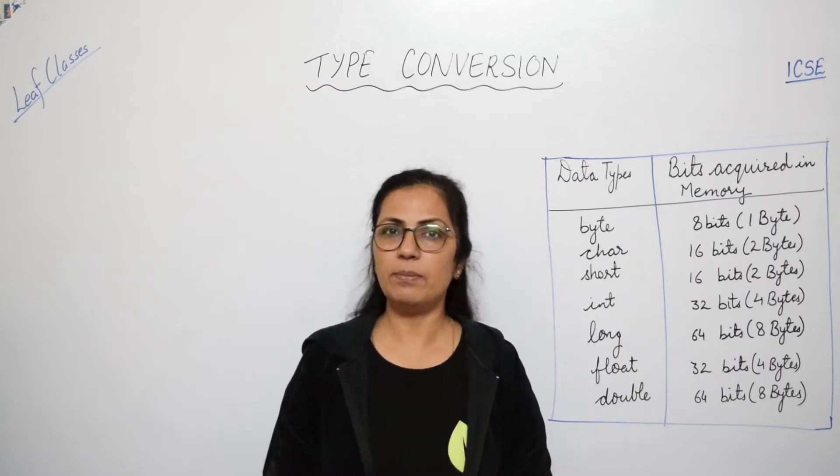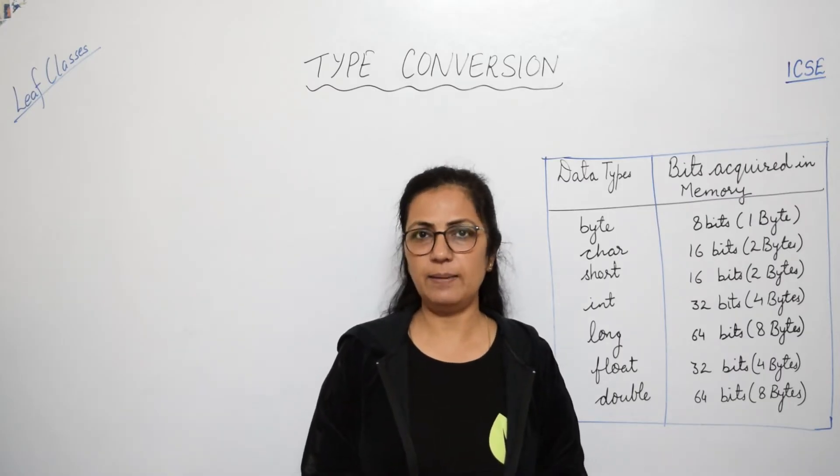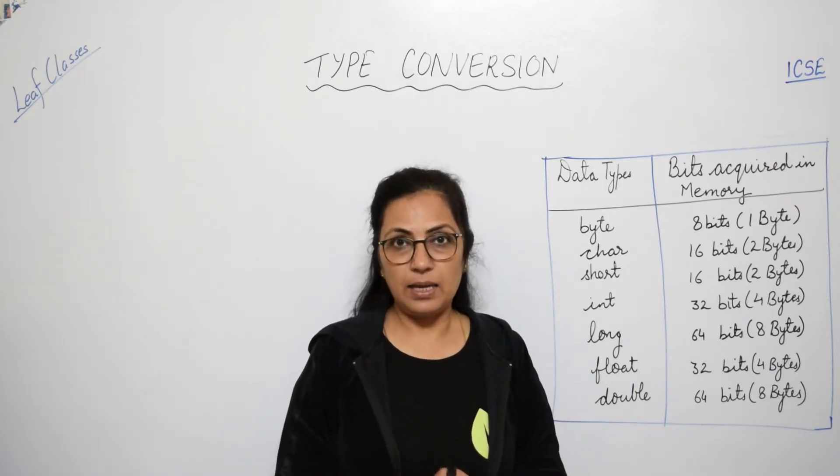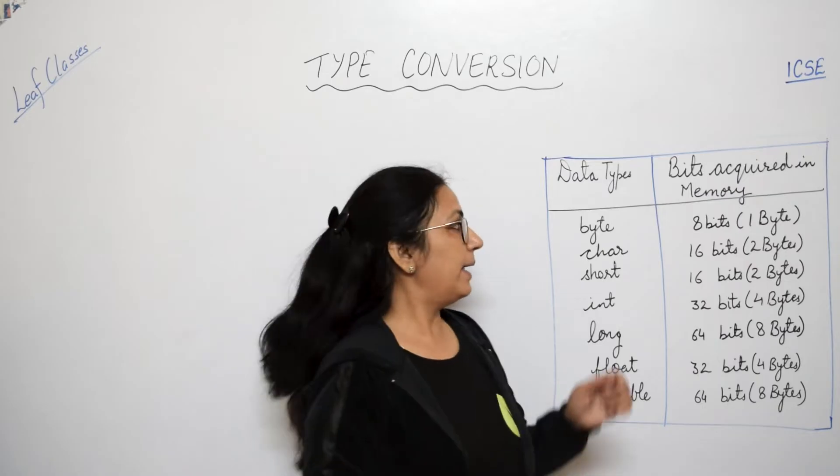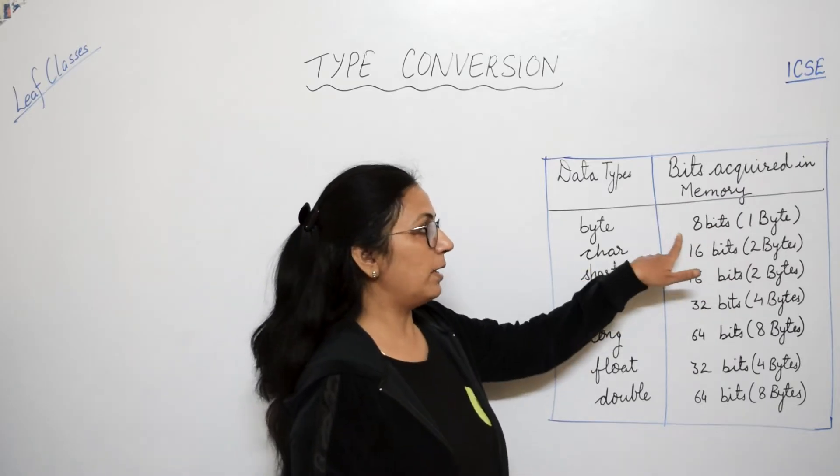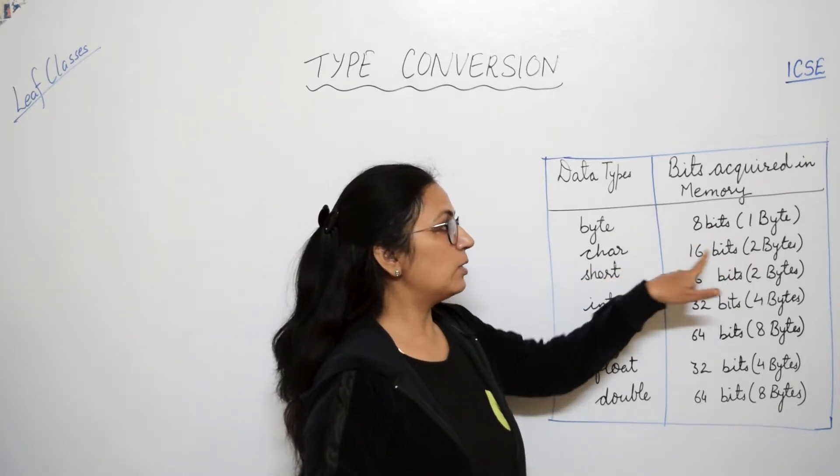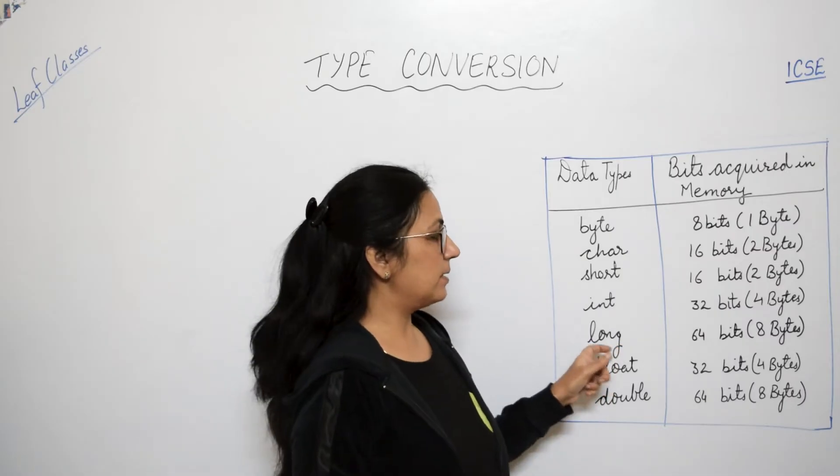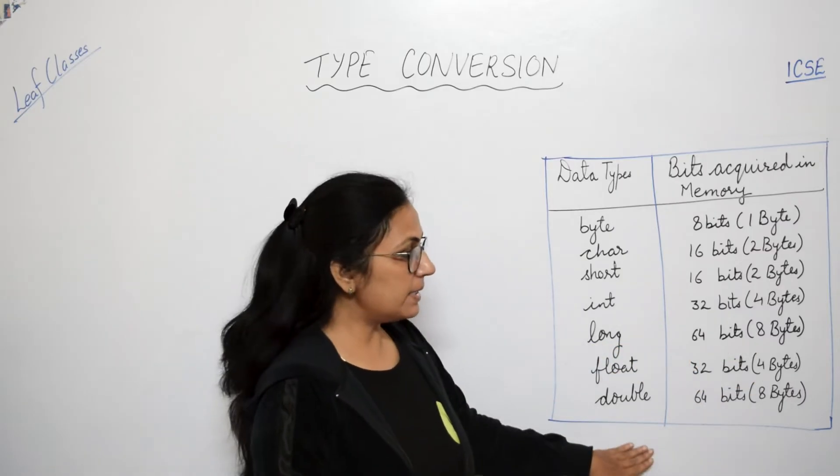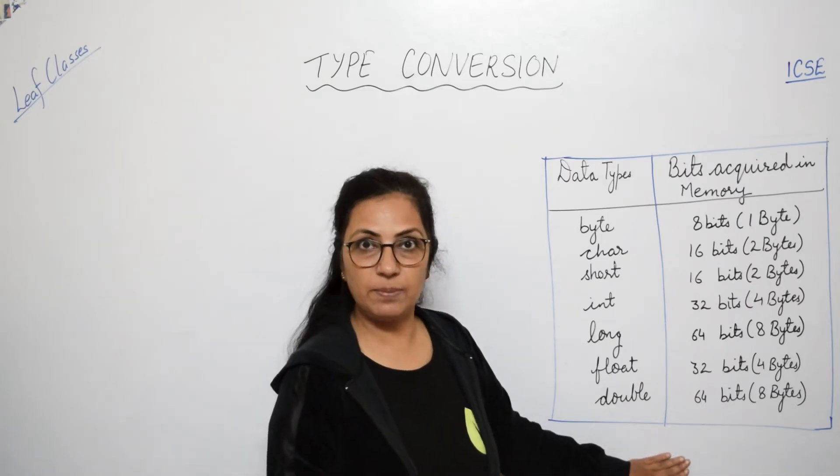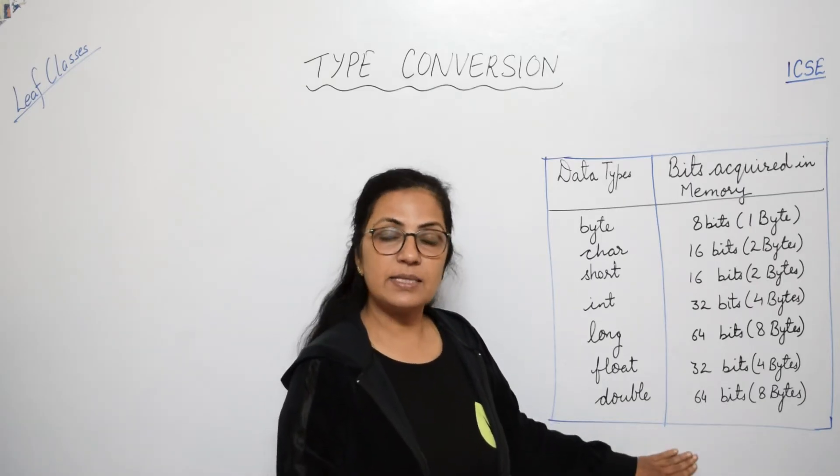In Java there are various data types like byte, char, boolean, short, float, double, long, so many data types are there. And each data type takes a different number of memory space like byte takes one byte or eight bits, char takes two bytes or sixteen bits, long takes eight bytes or sixty-four bits.